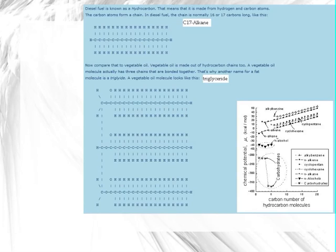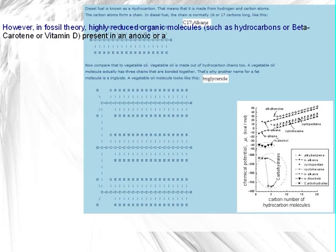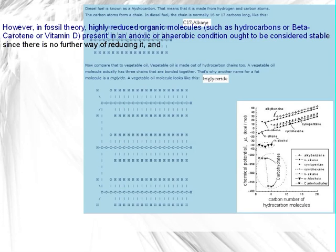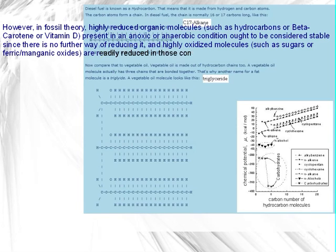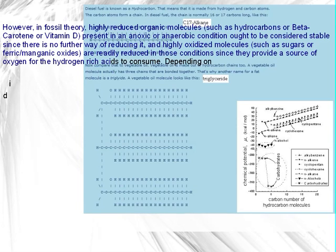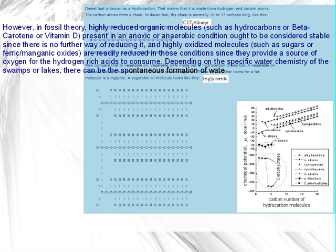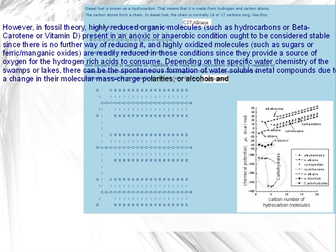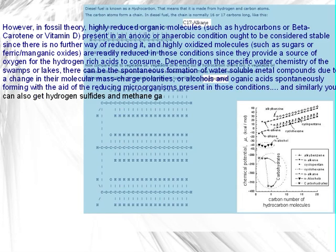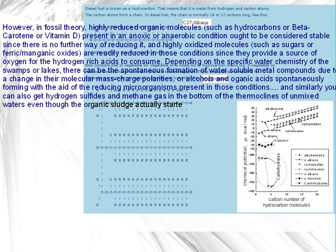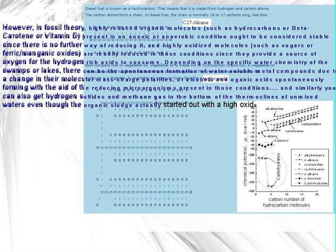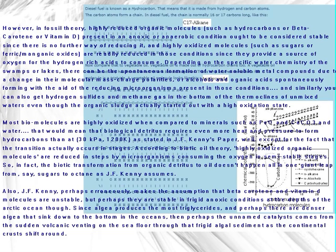In fossil theory, highly reduced organic molecules such as hydrocarbons, beta-carotene, or vitamin D present in anoxic or anaerobic conditions ought to be considered stable since there is no further way of reducing them. Highly oxidized molecules such as sugars or ferric-manganic oxides are readily reduced in those conditions since they provide a source of oxygen for hydrogen-rich acids. Depending on the specific water chemistry of swamps or lakes, there can be spontaneous formation of water-soluble metal compounds, or alcohols and organic acids forming with the aid of reducing microorganisms — and similarly, hydrogen sulfides and methane gas can form at the bottom of thermoclines.